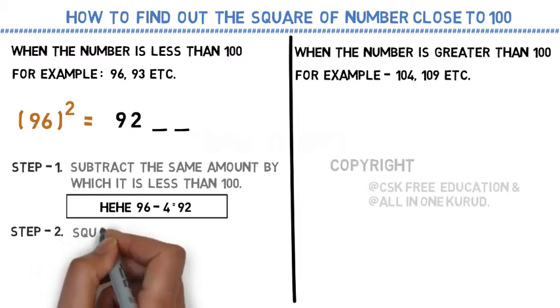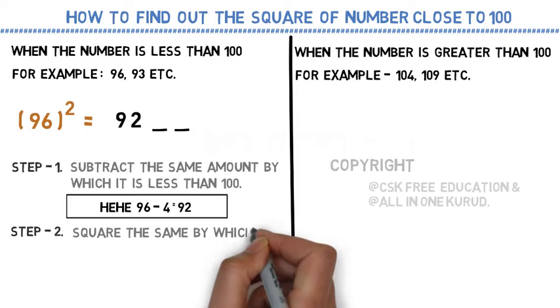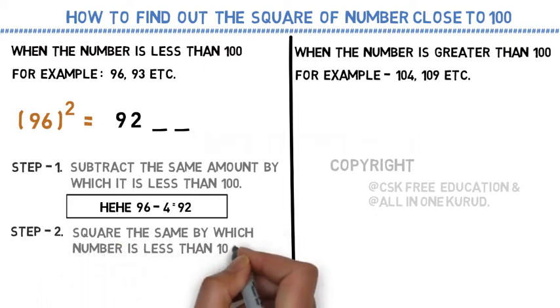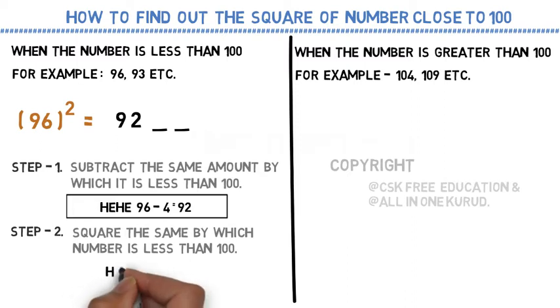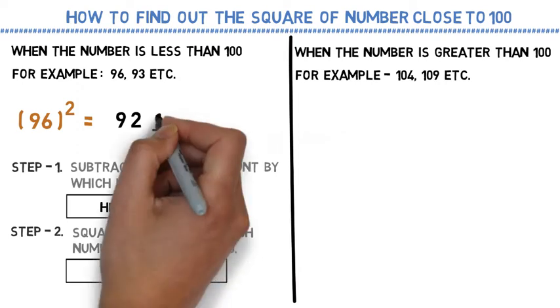Let's move on to step 2. Now you need to take the square by which the number is less than 100. That means you need to take the square of 4. Yes. And the 4 square is 16. That's it. 9216 is the answer.